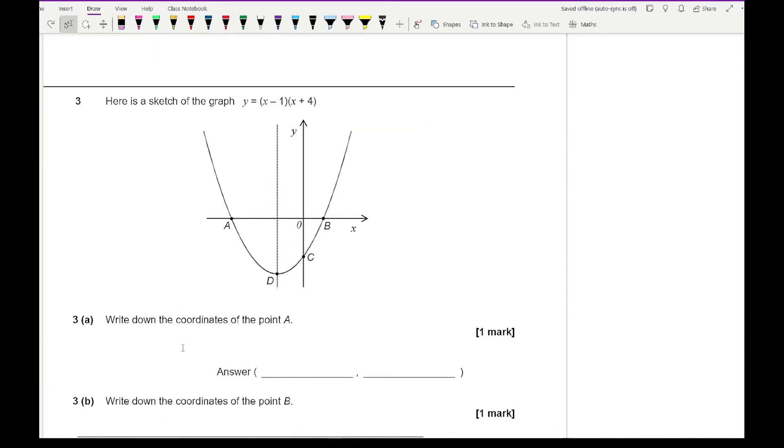So moving on to question 3 it says here is a sketch of y equals x minus 1 times x plus 4. And part 3a says write down the coordinates of a. Now if we look at the equation in its entirety we can work out what the roots are because it has been factorized. So here the roots are going to be x equals 1 or x equals minus 4. Now for it to be the coordinates of a, well a is basically the negative root. So that's going to be when x is minus 4 and y is obviously at 0. b is the positive root. So that's going to be when x equals 1 and 0.